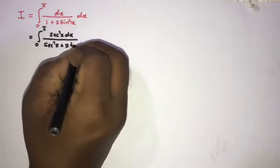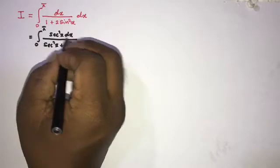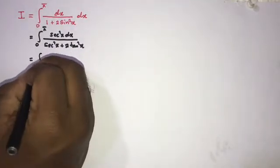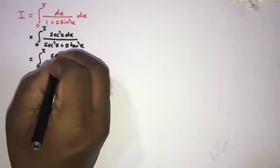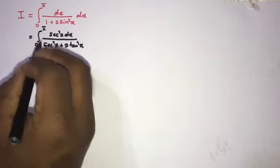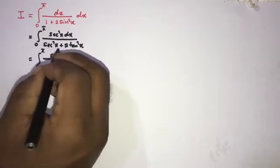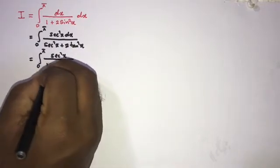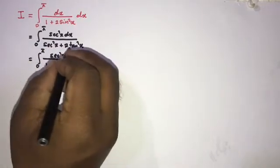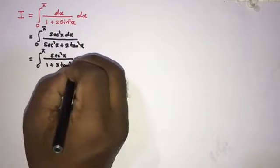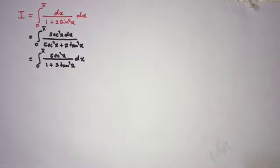We can simplify: the integral from 0 to π of secant squared of x over — now instead of secant squared of x we substitute 1 plus tan squared of x — giving 1 plus tan squared of x plus 2 times tan squared of x, which is 1 plus 3 times tan squared of x, dx.